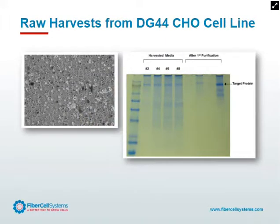Here's an example of some raw harvest from a CHO cell line. On the left, we can see measurement of cell viability — these cells are about 5% viable. Normally I don't like to say look at all the dead cells, but in this case we're going to say, oh, look at all the dead cells. On the right, in the lane labeled harvested media at days 2, 4, 6, 8, we can see that even with 95% non-viable cells, we still have a fairly clean supernatant of our target protein being produced in CHO.